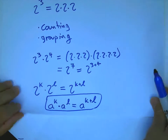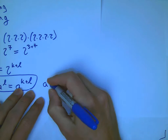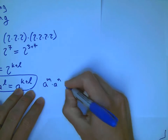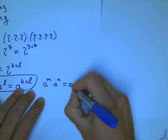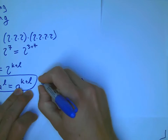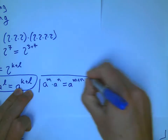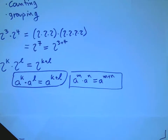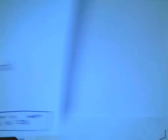The book has a very similar treatment. Using their letters: A to the M times A to the N equals A to the M plus N. It really doesn't matter what letters you use — that's a pretty important point.